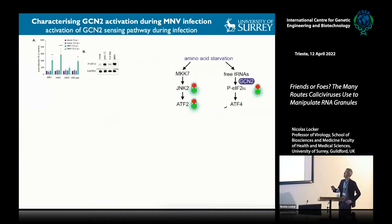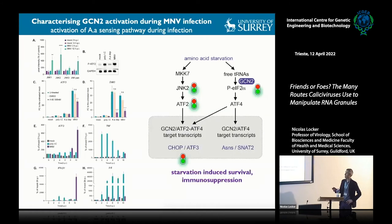In canonical amino acid starvation sensing, GCN2 is important, and we see that activation, but it is also communicated via JNK2 and ATF2. At 12 hours post-infection, we could notice activation of JNK2 and phosphorylation of ATF2. Downstream of this sensing, we have activation of GCN2 and ATF2 transcripts such as CHOP, ATF3—and we could clearly detect activation of CHOP and ATF3, mimicking during viral infection what we detect with amino acid deprivation.